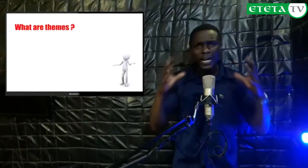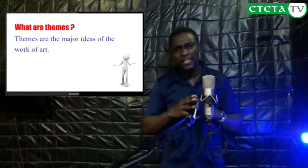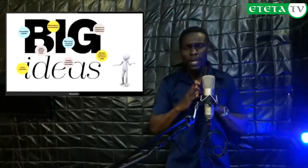What are themes, as far as literature is concerned? Themes are the major ideas that make up the work of art. When we read Song of Lawino and Okol, we can see that Lawino was complaining about a number of issues — her husband being in a relationship with Clementine. From this book we can see that love is also a theme; love was a major idea and that's why we call it a theme.